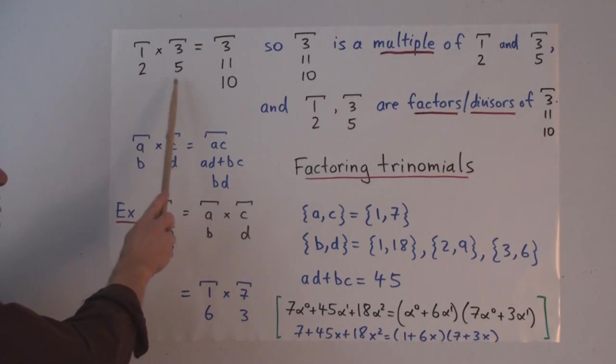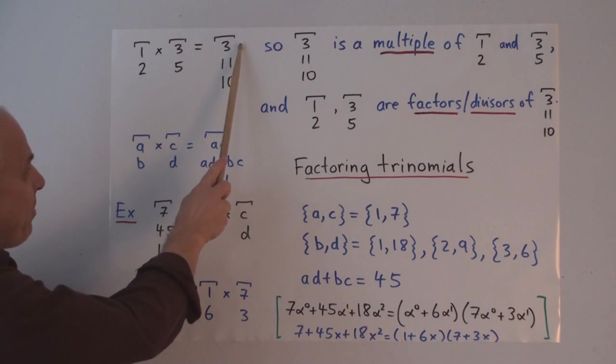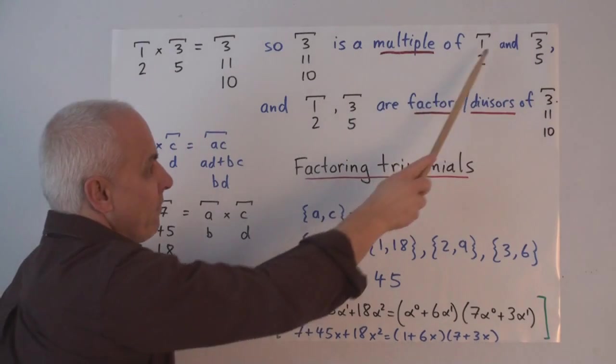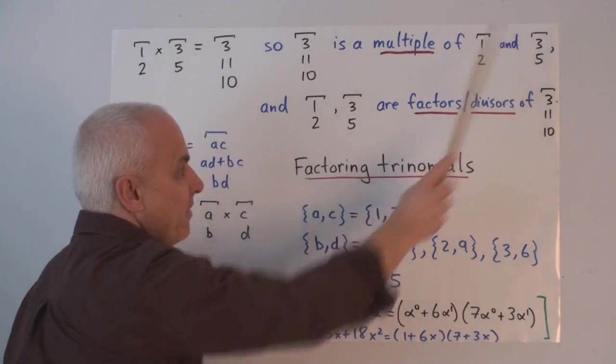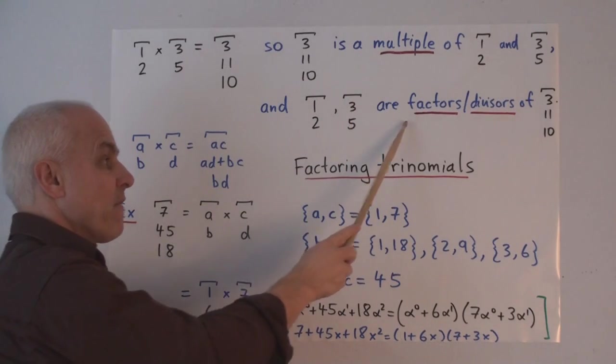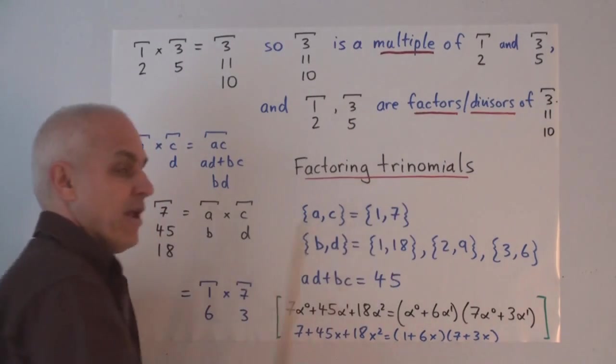The polynumber 1,2 times the polynumber 3,5 is the polynumber 3,11,10. So we say that 3,11,10 is a multiple of 1,2 or a multiple of 3,5. And we say that 1,2 and 3,5 are factors or divisors of 3,11,10.